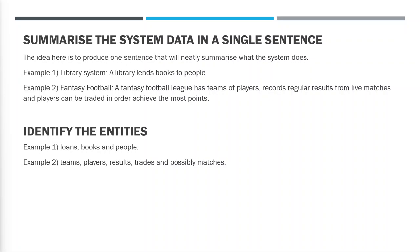A fantasy football league would have teams of players, it would record regular results from live matches, and players could be traded in order to achieve the most points in the league or season. So from this sentence we can see we've got teams, players, results, trades, and possibly matches. You're better off having more entities rather than less, because you can always cross them off. For example, matches — that information is probably going to be stored in results, so maybe we don't need matches as an entity.